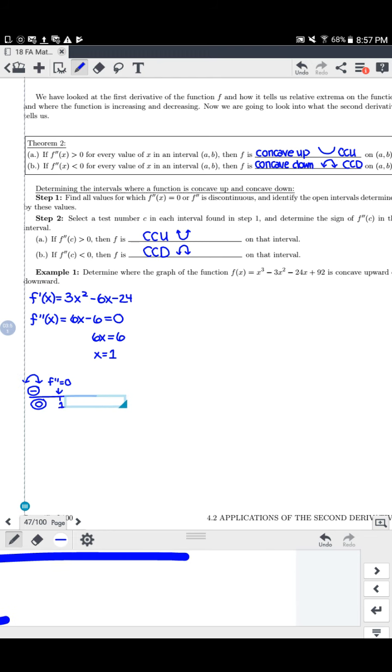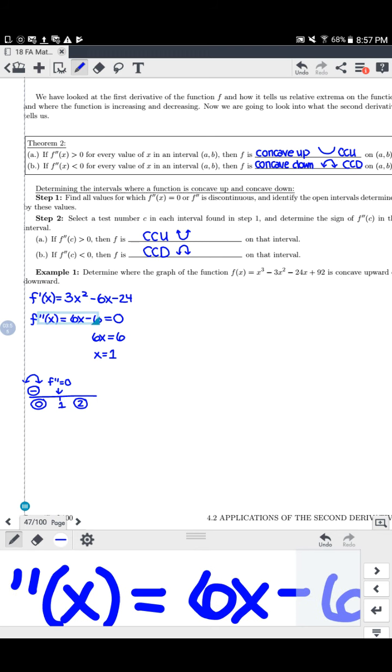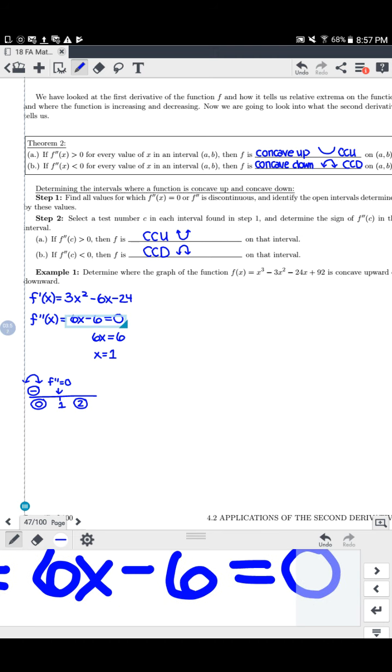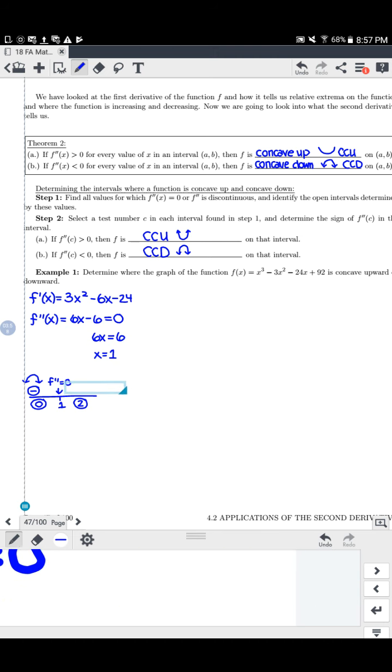And then after 1 I could plug in anything I want. Maybe I'll just plug in 2. And I'm plugging into this second derivative on my sign chart. So 6 times 2 is 12. 12 minus 6 is a positive number. So we're concave up.